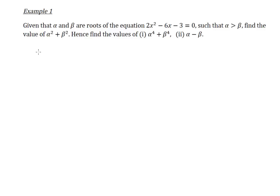Now let's take a look at this particular question. Given that alpha and beta are the roots of this equation, we have a quadratic equation which is 2x squared minus 6x minus 3 equals 0. Here, 2 is our A, negative 6 is our B, and negative 3 is our C.